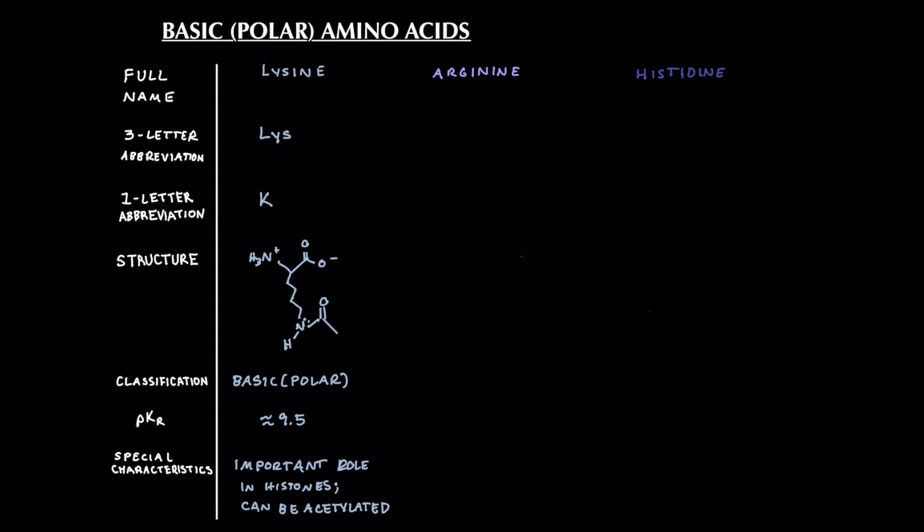So we're going to erase that just to make sure we understand that that is not how lysine looks most of the time. Most of the time it carries this positive charge and the reason that lysine is so important to histones is that DNA carries a net negative charge thanks to the phosphate backbone that it has therefore lysine being positively charged can coulombically interact with that DNA quite well. So that's it for lysine.